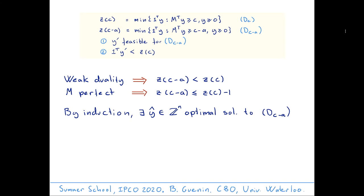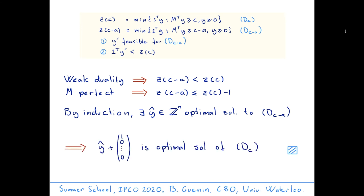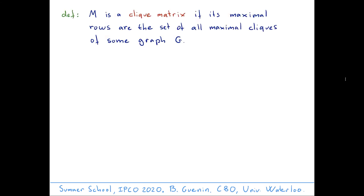Now we are ready to use induction on C - A. By induction there exists an optimal integer solution ŷ to D(C - A). We use that solution to get a solution to the original problem D(C) by adding 1 to the first component. This is feasible for D(C) and its value is 1 plus the value of ŷ, which equals Z(C) - 1 + 1 = Z(C). That completes the proof.